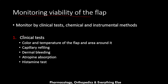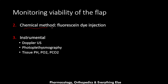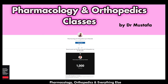The viability of the flap is monitored by clinical tests, chemical methods, and instrumental methods. Clinical tests examine the flap for color, temperature, capillary refilling, dermal bleeding, atropine absorption, and histamine test. Chemical methods include fluorescein dye injection. Instrumental methods include Doppler ultrasound to check arterial flow, laser flowmetry, and measurement of tissue pH, PO2, and PCO2. Thank you for watching — please like and subscribe, and you can support us via the Patreon link in the description.